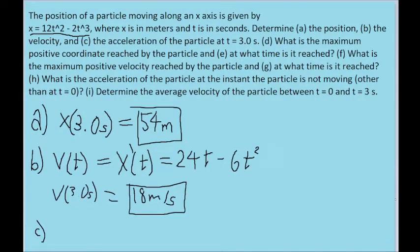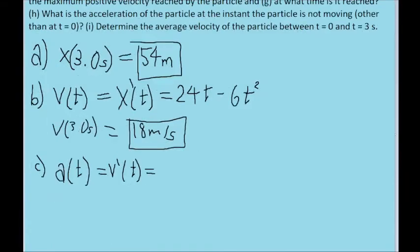Part C is the same idea, except now we're being asked about acceleration rather than velocity. We'll basically have to do the same thing we did in part B. Acceleration is the derivative of velocity, so now we just need to take the formula we just found for velocity and take the derivative of that to find the formula for acceleration. Once again, we'll just have to use the power rule here. The 24t term, the derivative of that, we just drop the t so it becomes 24.